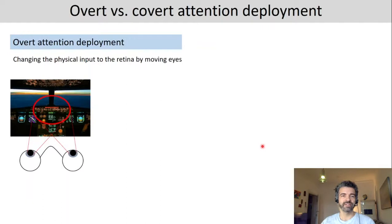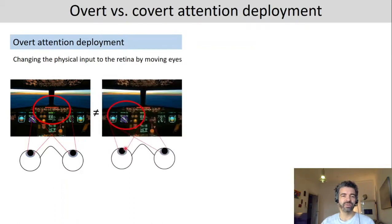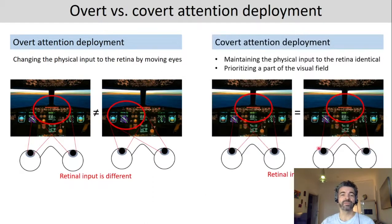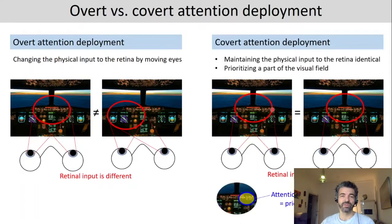To clarify the distinction between overt and covert attention deployment: overt attention deployment is changing the physical input to the retina by moving your eyes — for example, sitting in a cockpit and moving your eyes to read information from a panel. Covert attention deployment refers to a process where the retinal input is exactly the same (you do not move your eyes), but instead you prioritize a part of the visual field. So you may prioritize one part or another, even though the retinal input is identical.